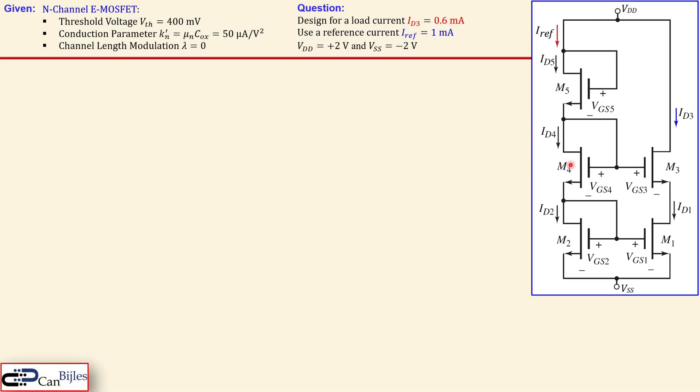So this is our circuit. We see here in total five MOSFETs. They are N-channel enhancement type and the parameters for the MOSFET are shown here. They are all matched so they have the same threshold voltage, conduction parameter and also channel length modulation.